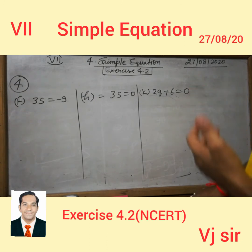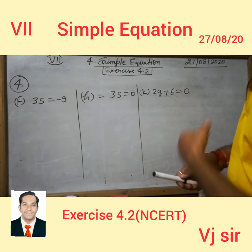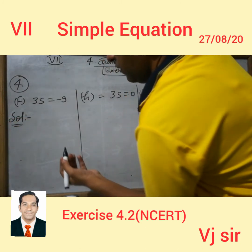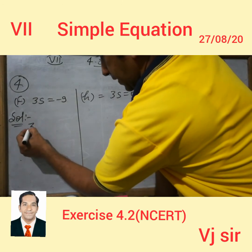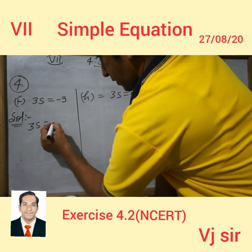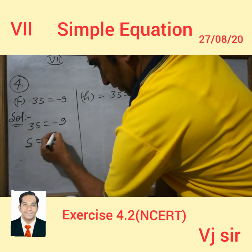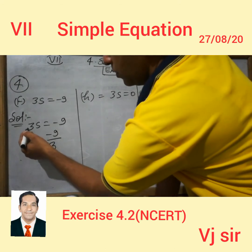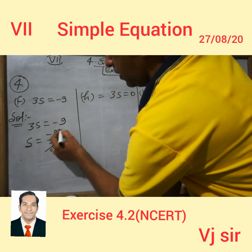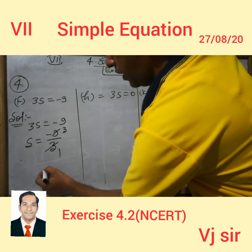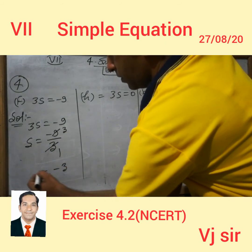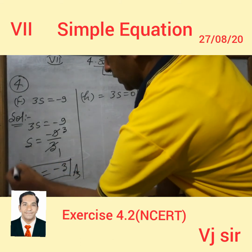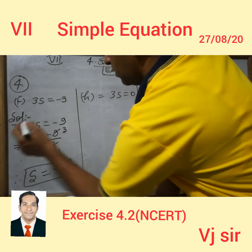Now we are going to the next part of the same question — question number F. In this question we will find the value of S. 3S is equal to minus 9. S is on its own place and 3 will be changed. So the value of S is minus 3.